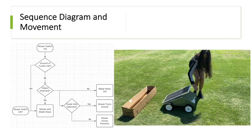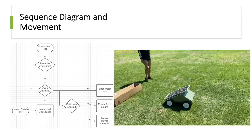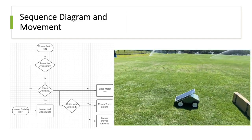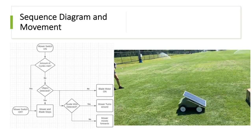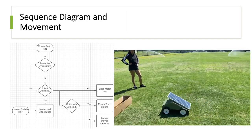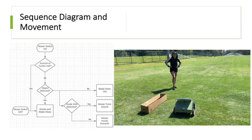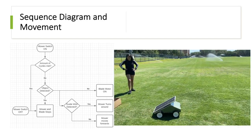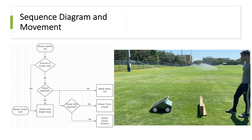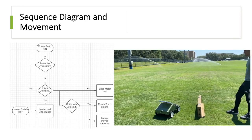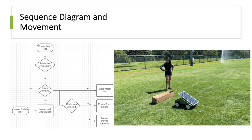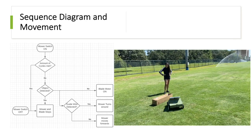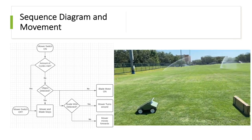This is the sequence diagram that our program logic follows for movement, along with a clip of it in action. The mower repeats a back-and-forth motion until the set number of cycles is reached, depending on the size of the area you want to cut.